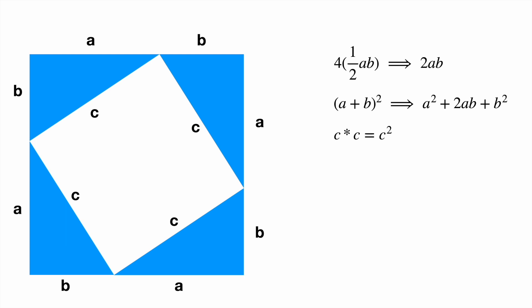The area of the big square has an area of a plus b squared. Expanding the brackets gives us a squared plus 2ab plus b squared.